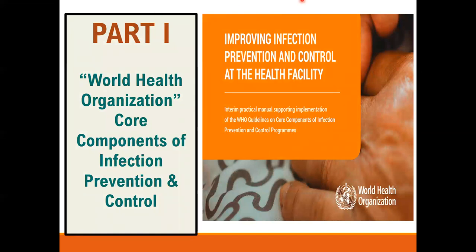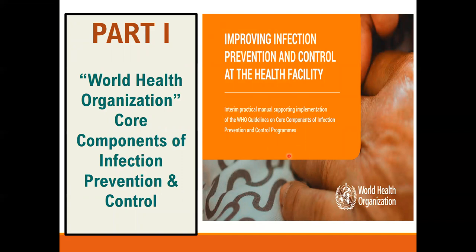In part one, we will discuss the WHO Core Components. The WHO Core Components were introduced in 2008, followed by a comprehensive revision in 2016. WHO then released a practical manual in 2018 for improving infection prevention and control at the health facility level. These practical guidelines are the major reference of today's presentation. According to WHO, IPC — infection prevention and control — is a universally relevant component of all health systems and affects the health and safety of patients, staff, and visitors.